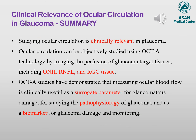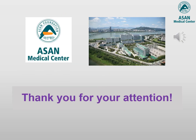In summary, studying ocular circulation is clinically relevant in glaucoma for the following reasons. Ocular circulation can be objectively studied using OCT angiography technology by imaging the perfusion of various glaucoma target tissues, including optic nerve head, retinal nerve fiber layer, and retinal ganglion cell tissue. OCT angiography studies have demonstrated that measuring ocular blood flow is clinically useful as a surrogate parameter for glaucoma damage, for studying the pathophysiology of glaucoma, and as a biomarker for glaucoma damage and disease monitoring. Thank you very much for your attention, and I appreciate the IOCS organizers for the opportunity to speak today.